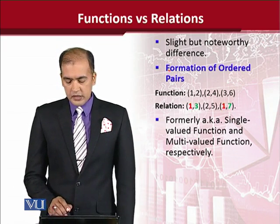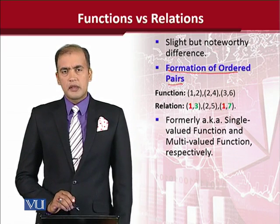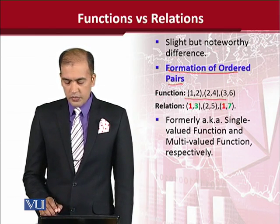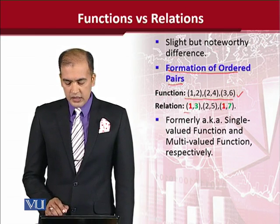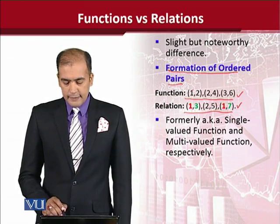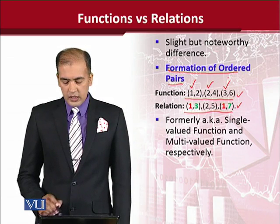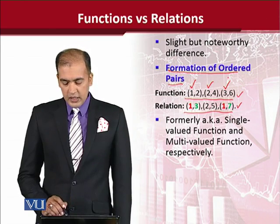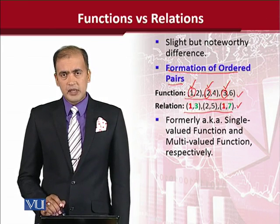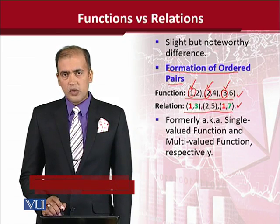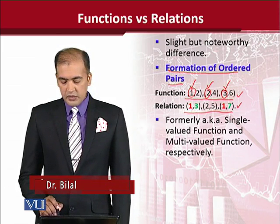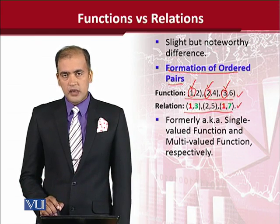The first point in this differentiation is that the formation of ordered pairs reveals a certain pattern. This is the set of ordered pairs for a function, and that is a set of ordered pairs for a relation. The noteworthy thing is that the value of x in the ordered pairs of a function is different — it is 1, it is 2, and it is 3. It is not being repeated. Whereas, when I talk about the ordered pairs of a relation, they are getting repeated. As I have highlighted, 1 and 1 are being repeated in the first and the third ordered pair.